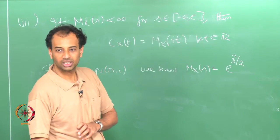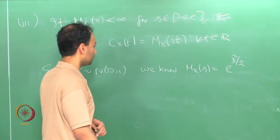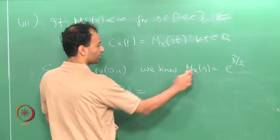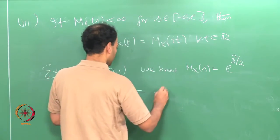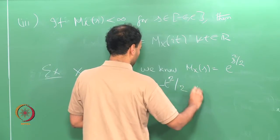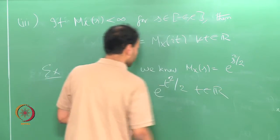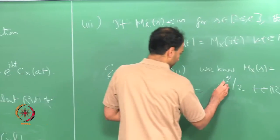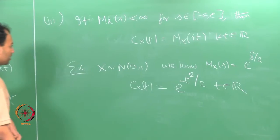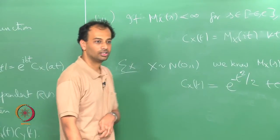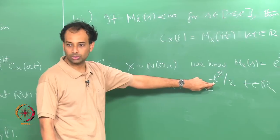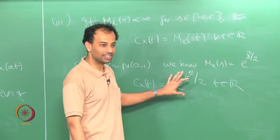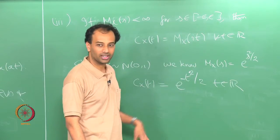For the standard Gaussian, c_x of t will be equal to m_x of it, which equals e to the power minus t squared over 2, for all t in R. So the characteristic function of a standard Gaussian is e to the power minus t squared over 2 — it also looks like a Gaussian, except for the 1 over square root of 2 pi factor.